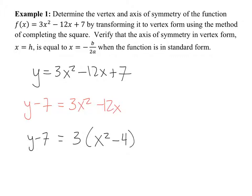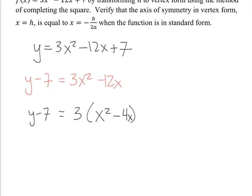Why did I write it like this? Because if you took a 3 out, you'd have y minus 7 over 3, and that would get messy. That 3 would come back to haunt you later in the process. So we're going to take a 3 out more cleanly. Now we're going to look only at the x terms inside and treat this as what we want to complete the square for. Here's B — halve it and square it.